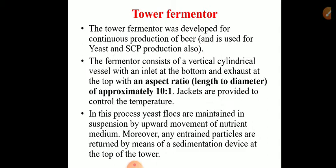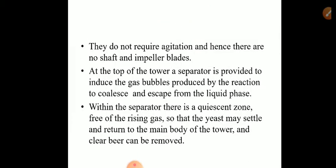In the process — since this tower fermenter was basically designed for production of beer — yeast flocs, that is cultures of yeast in floccular form, are maintained in suspension by the upward movement of nutrient medium. Nutrient is added from the bottom of the vessel. The suspension of yeast flocs is kept in continuous suspension by the upward movement of the nutrient. Any entrained or entrapped particles are returned by means of a sedimentation device present at the top of the tower. These vessels do not require any agitation; the air forced in itself helps maintain the yeast flux in suspension.